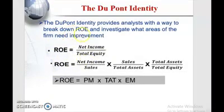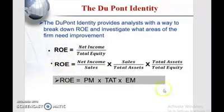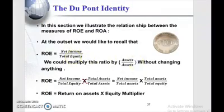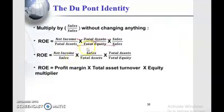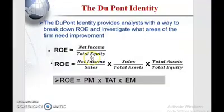First, the return on equity is equal to net income over total equity. This is done to know what the sources are that generate value for shareholders. This formula can be reached by multiplying the return on equity by total assets over total assets, and by sales over sales, then rearranging the formula to reach its final appearance.